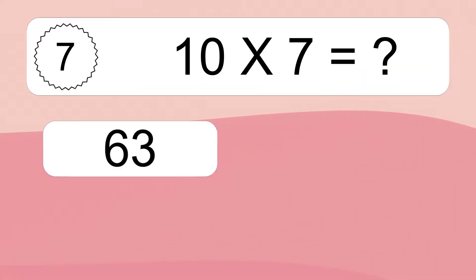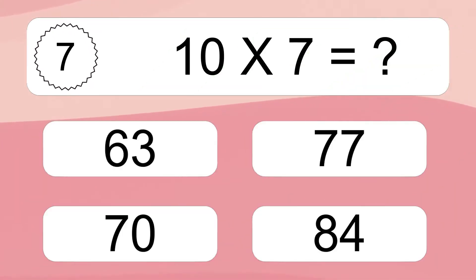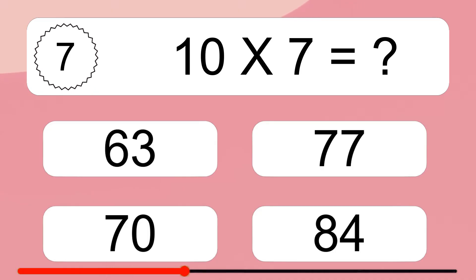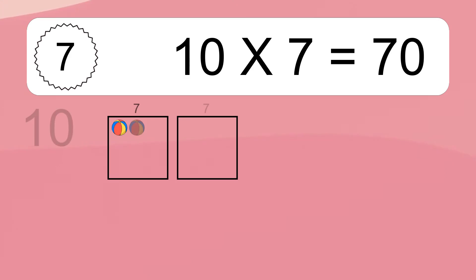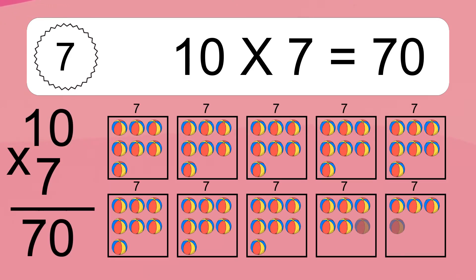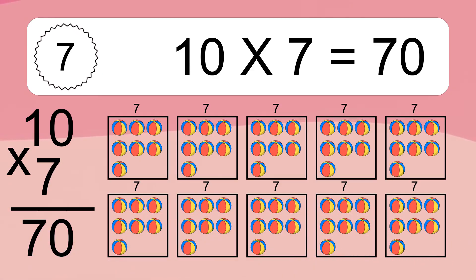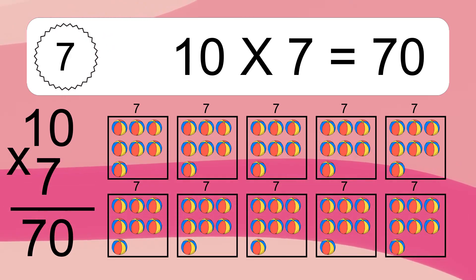10 times seven equals what? 10 times seven equals 70. We have 10 boxes and each box has seven colorful balls inside. If you count all the balls in all the boxes together, you will have 10 times seven balls. This equals 70 balls.